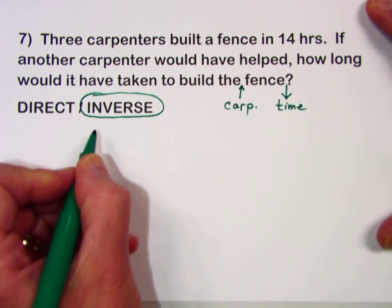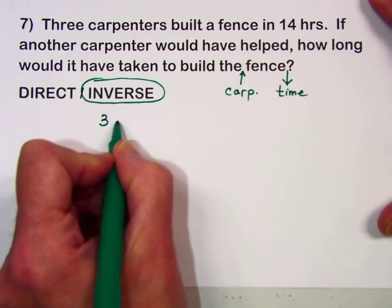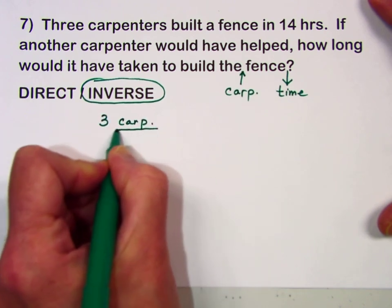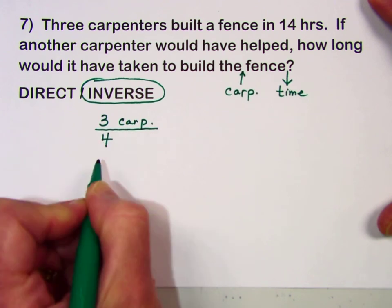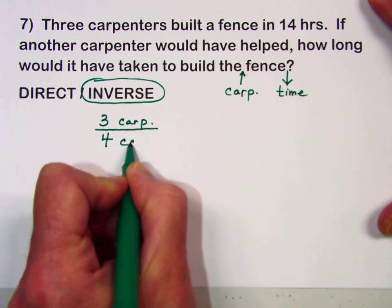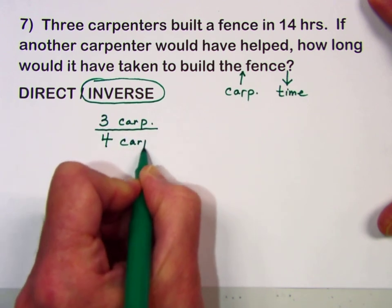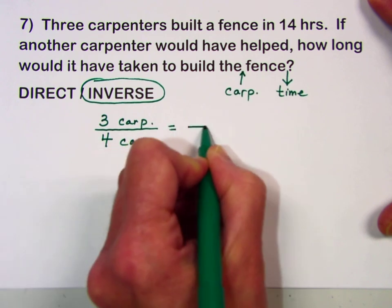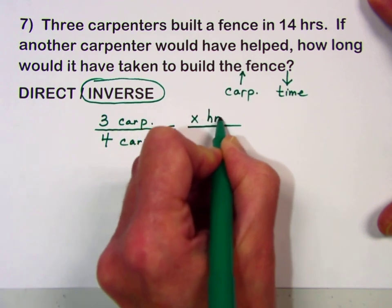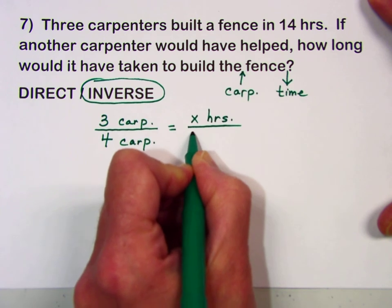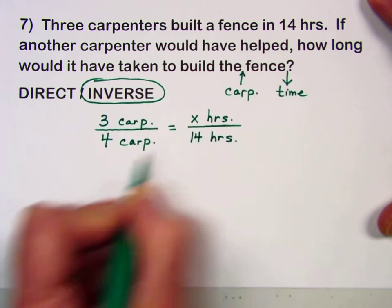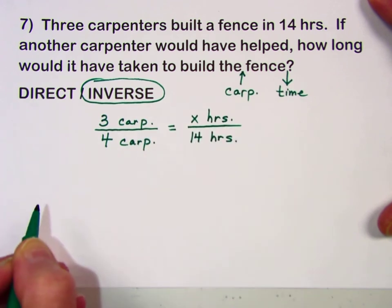To solve this, I'm going to take the original number of carpenters compared to the new number — another carpenter joins, bumping it up to four — set equal to the new time, which is our unknown, compared to the original 14 hours when three carpenters were working.